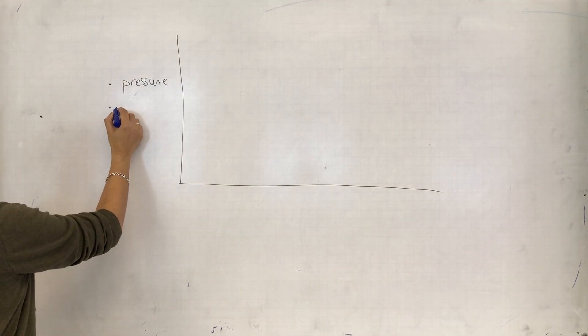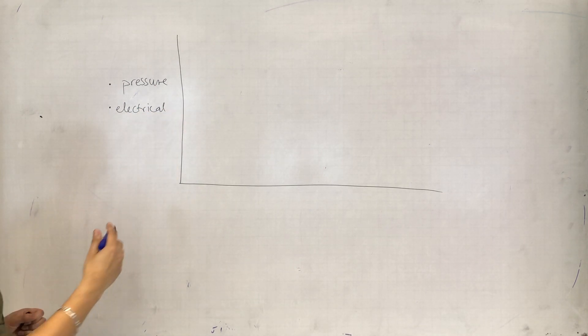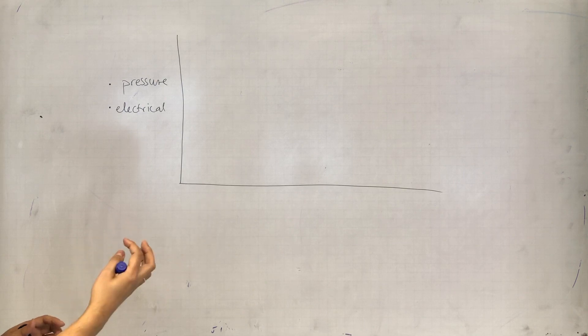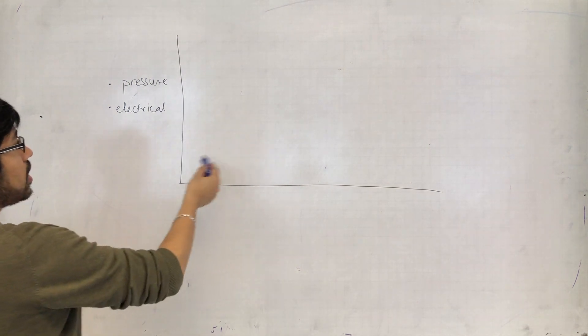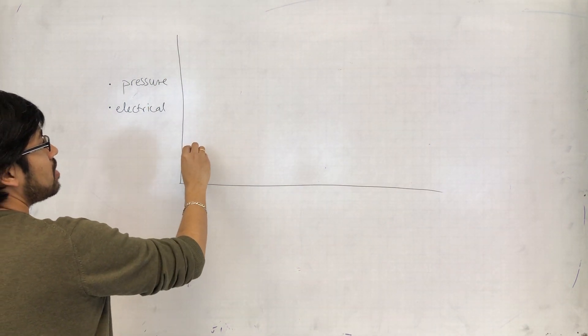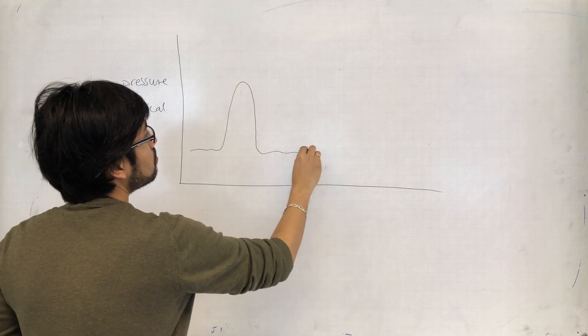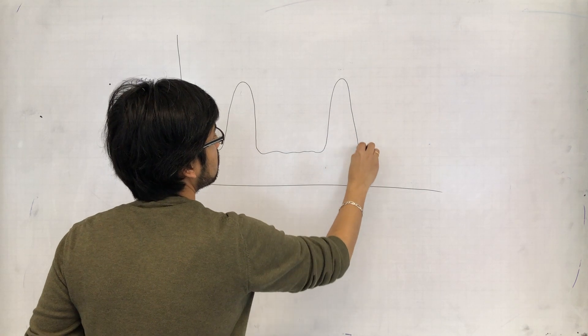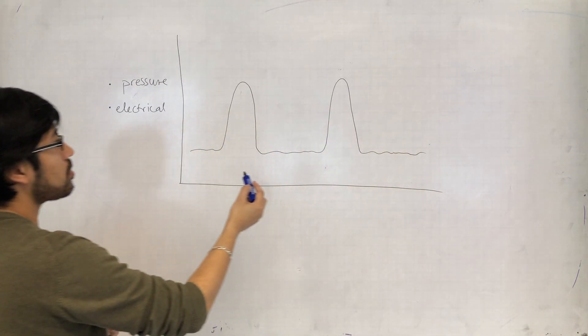...you might have electrical changes related to the sinoatrial node, the atria contracting, the electrical impulses that cause the atria and ventricles to contract, and diastole. So in either case, what you have is changes in pressure related to the events of the cardiac cycle.